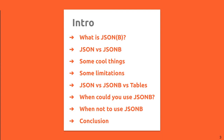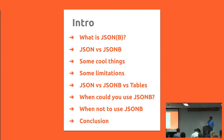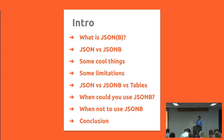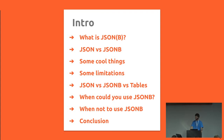Basically this is what the talk is going to be about: What is JSONB? JSON versus JSONB — sometimes you might actually want to use JSON over JSONB, but that's really very specific situations. Some cool things, some limitations of JSONB, and tables, and some way halfway in between. When you could use JSONB, when I think maybe it's not such the best idea, and then some conclusions.